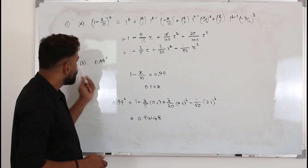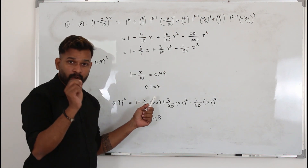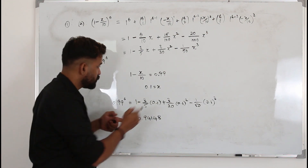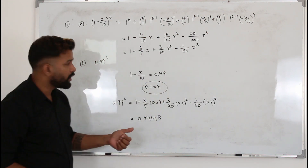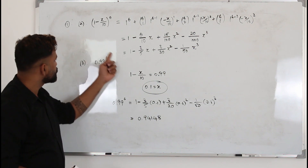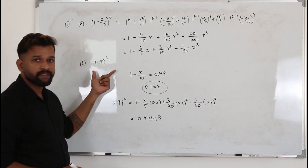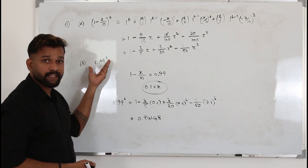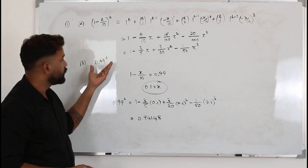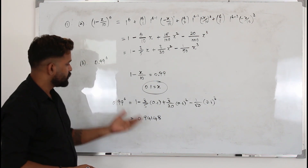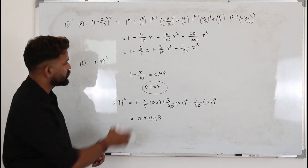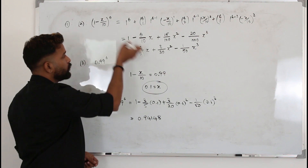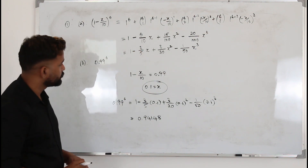So in Part B, find the appropriate value of x — in this case x = 0.1 — and then substitute that value on both sides of the binomial expansion. The left side gives you the expression to approximate, and the right side gives the numerical approximation.